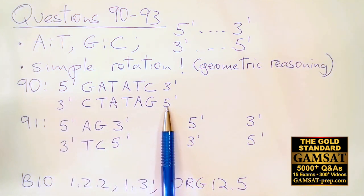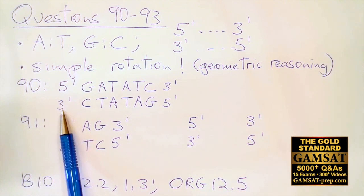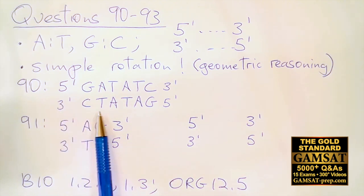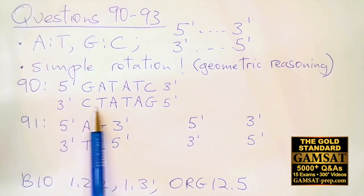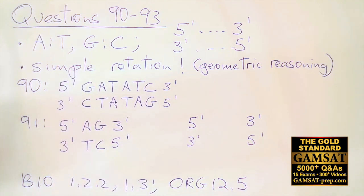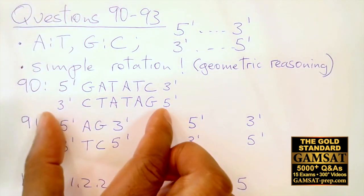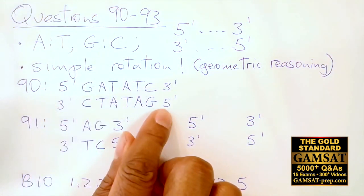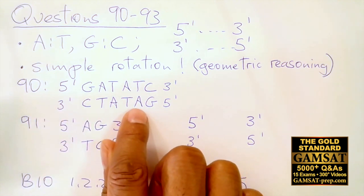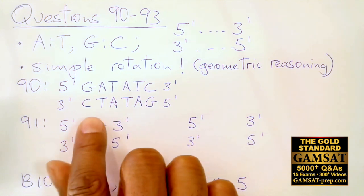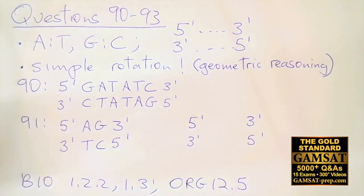Now look at the answer choices. Answer choice D starts with 3' and has C, but then goes wrong with A-T, so it's incorrect. Answer choice C also starts with 3' but has G-A, so that's also incorrect. Reassessing A and B and applying the simple rotation rule, I take my determined strand and turn it so the 5' end moves to the other side, giving the same sequence: G-A-T-A-T-C, 3'. The answer is A.